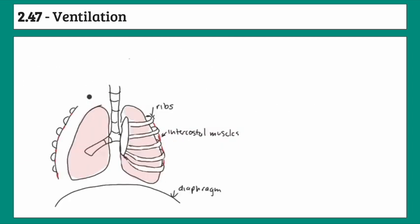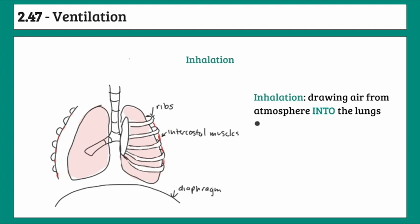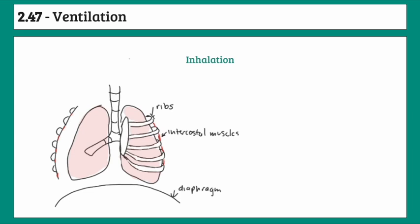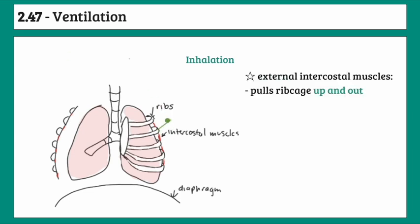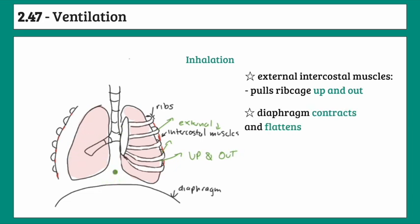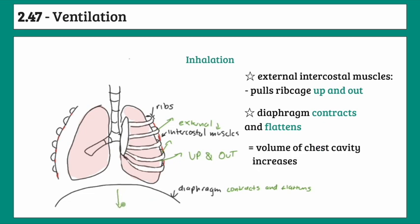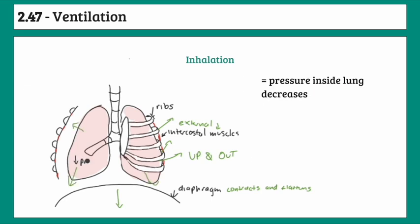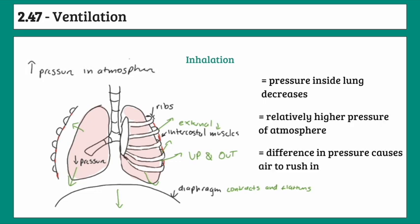For inhalation — drawing air from outside into the lungs — the external intercostal muscles pull the ribcage up and out, and the diaphragm contracts and flattens, which means it's pulled downwards. This allows the space of the chest cavity to increase, creating a lower pressure inside the lungs. There's a relatively higher pressure in the atmosphere, and because of this pressure gradient, air rushes into the lungs.